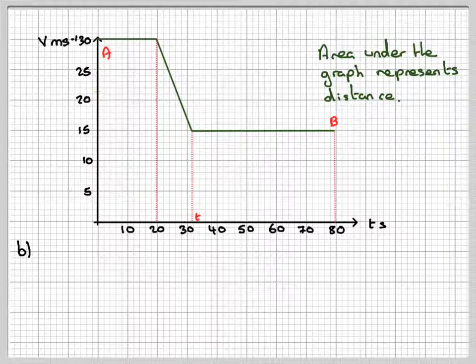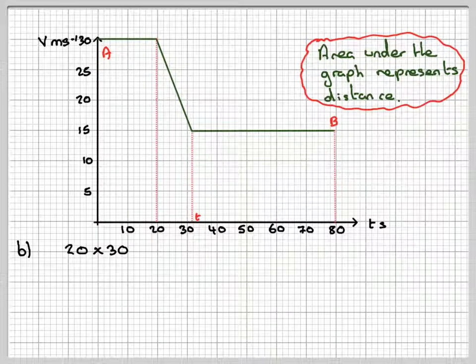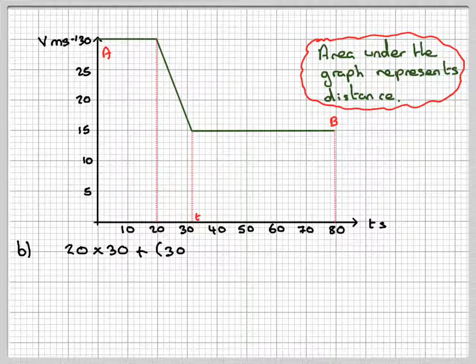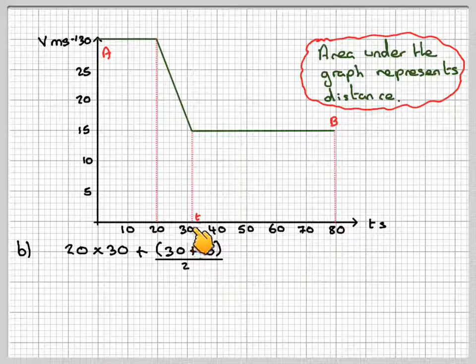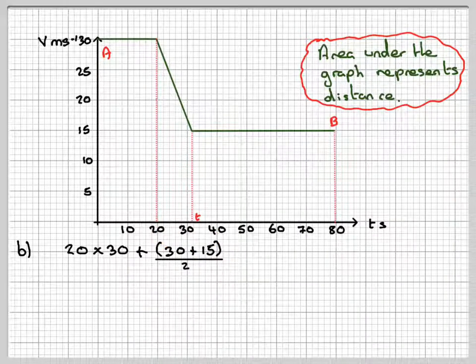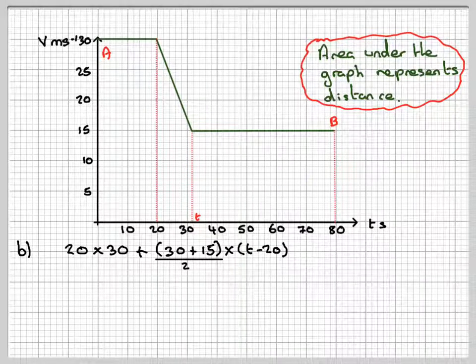It's 20 times 30. The area of this trapezium, this is a trapezium that will be 30 plus this distance here which is 15 divided by 2. This height here is going to be whatever T is minus 20. And then we've got the area of this rectangle here.